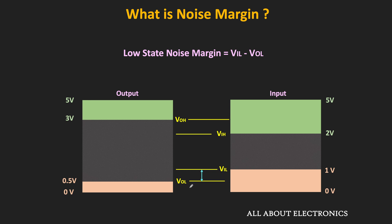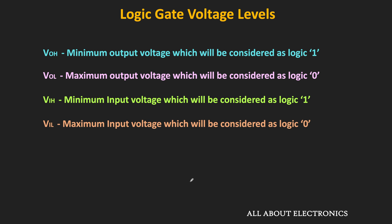This noise margin is known as the low state noise margin. As you can see, this noise margin defines how much noise the logic gate can tolerate. And definitely, the larger value of the noise margin is preferable — the larger the noise margin, the more immune the logic gate is to external noise. So that is all regarding the noise margin. While understanding the noise margin, we have seen four different voltage parameters for the logic gate. Similar to the voltage parameters, different current parameters are also defined for the logic gate.